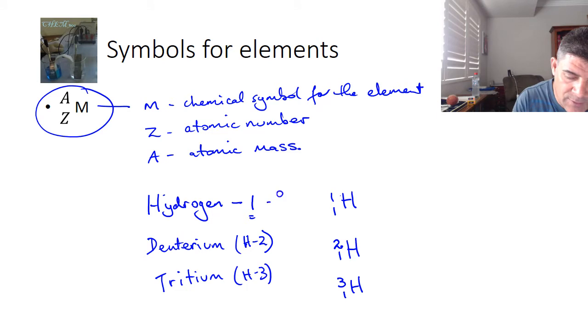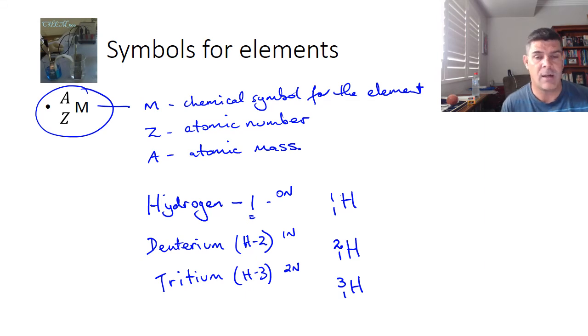So in hydrogen-1, there are 0 neutrons. In hydrogen-2, there is 1 neutron. And in hydrogen-3 and tritium, there are 2. The atomic number is defined by the number of protons, so it doesn't change. If it changes, so does the element. And this gives you a little bit of an idea about how we write the symbols for different elements.